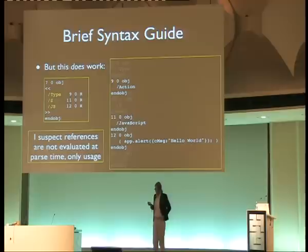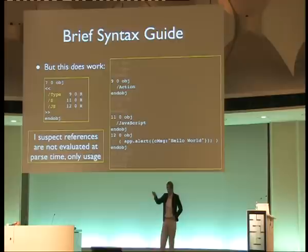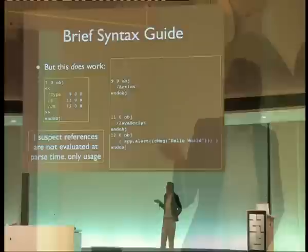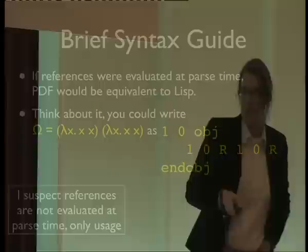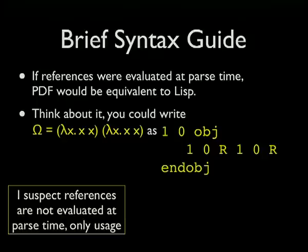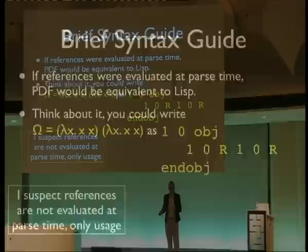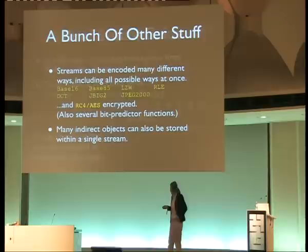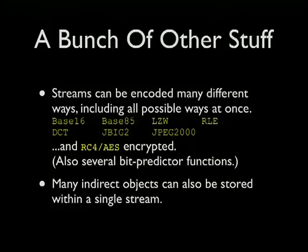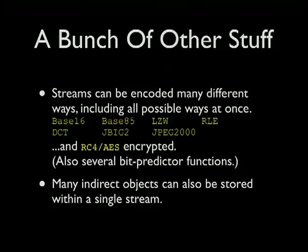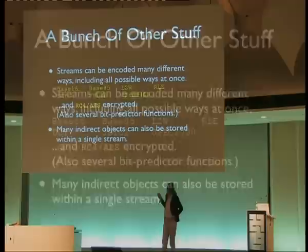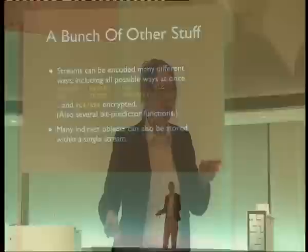I haven't actually reversed the actual parser, I'm just feeding it PDFs. I suspect it does the evaluation when it actually goes to use the object. I haven't actually tested other PDF readers to see if any do reference evaluation at parse time — if that's the case, then they are Turing-complete. There are also a lot of ways of encoding a stream. You can compress it one of 16 different ways, all simultaneously, in any order you want. There's also an encryption option — in older versions, possibly still in current ones, if you RC4 encrypt a stream with a null password, Acrobat is smart enough to figure out it was a null password and will silently decrypt it without prompting the user.